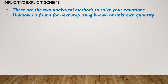There are first two generic statements applicable for all the schemes — not necessarily for these two implicit and explicit schemes. So these two are analytical methods to solve your equations. The second is: the unknown is found for the next step using your known or unknown quantity. I'll explain in the next couple of seconds what I mean by known or unknown quantity.